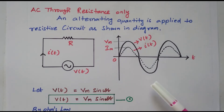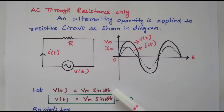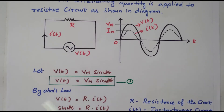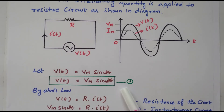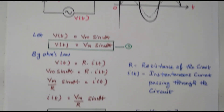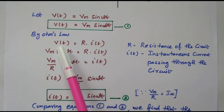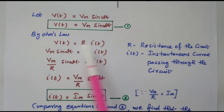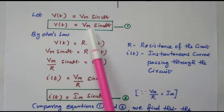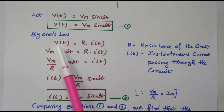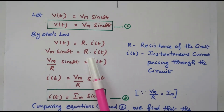We will analyze how current and voltage are in phase in the resistive circuit in terms of equations. We take equation 1: V(t) = Vm sin(ωt). By Ohm's law, V(t) = R · I(t). Substituting V(t) from equation 1, we replace V(t) with Vm sin(ωt), giving Vm sin(ωt) = R · I(t).